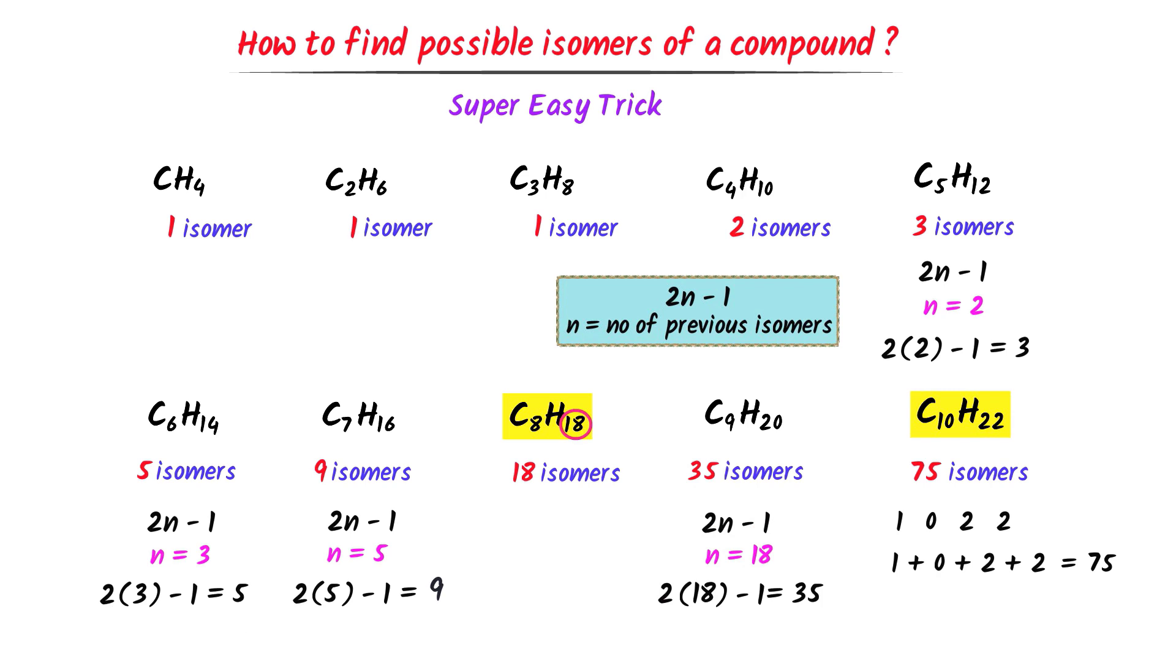Therefore, using this simple trick, we can easily find the possible isomers of the alkane family. I hope that you have learned this super easy trick.